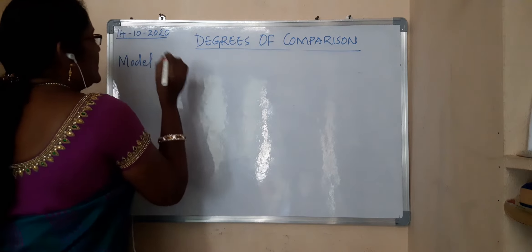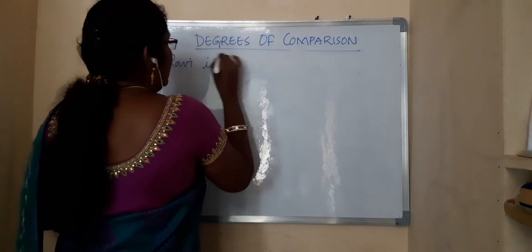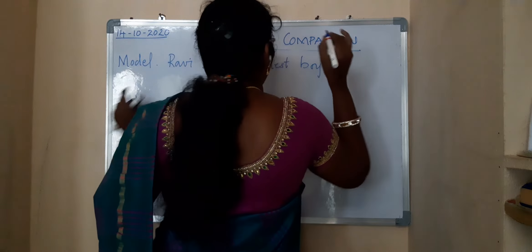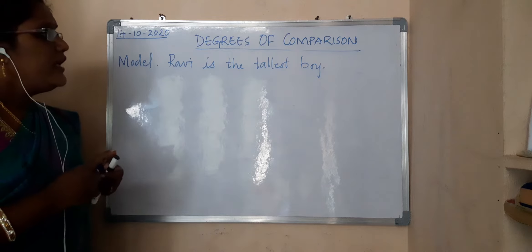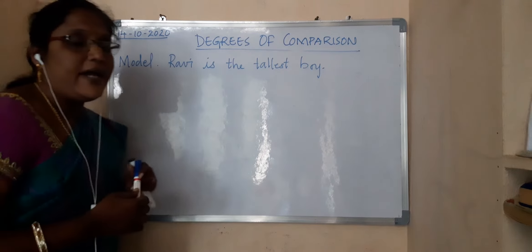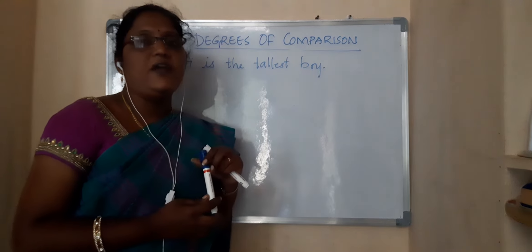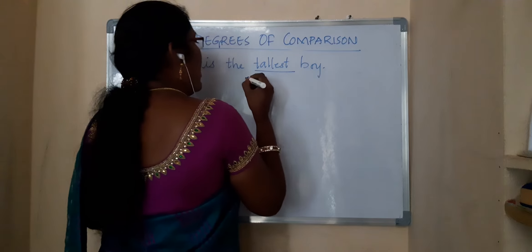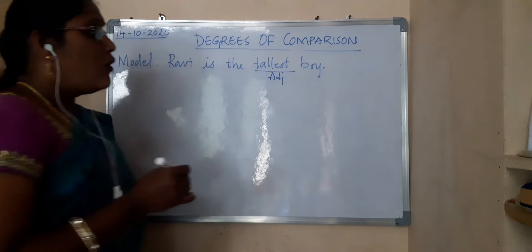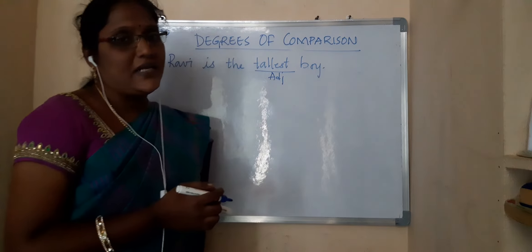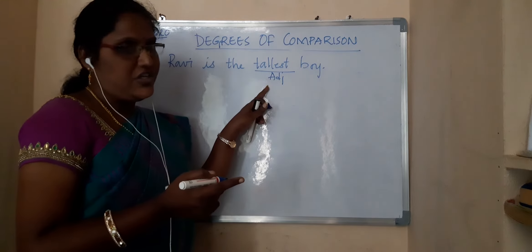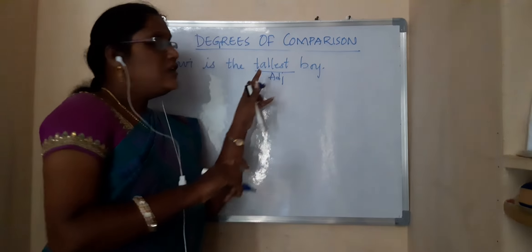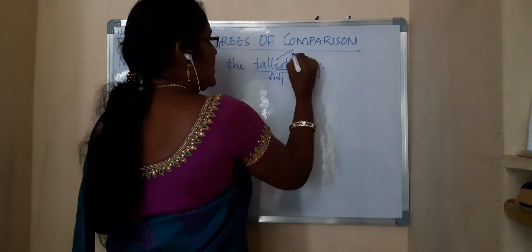Model 1 — for example the sentence: 'Ravi is the tallest boy.' First, in the given sentence you need to identify what is the adjective — here we are describing about Ravi, so the adjective is 'tallest.' Second, you have to identify which degree it is in. It is in superlative degree because it ends with E-S-T.